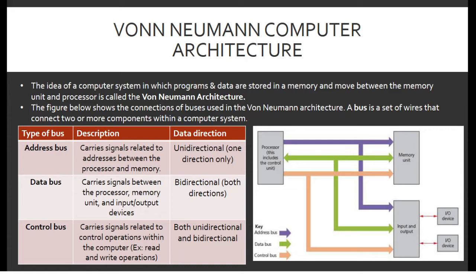The three buses include: the address bus, which carries signals related to addresses between the processor and memory; the data bus, which carries signals between the processor, memory unit, and input or output devices; and the control bus, which carries signals related to control operations within the computer, such as read and write operations. The address bus is unidirectional, the data bus is bidirectional, and the control bus carries signals in both a unidirectional and bidirectional manner.